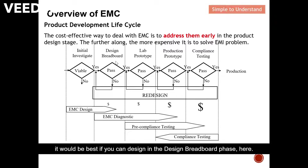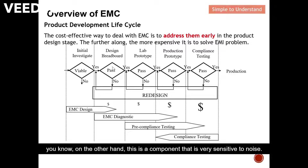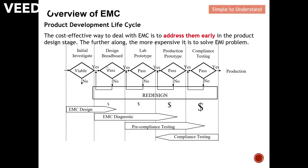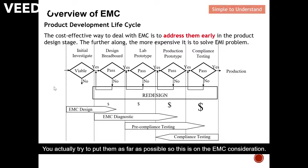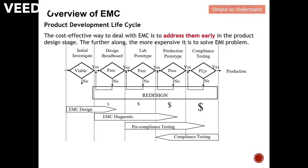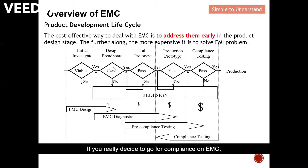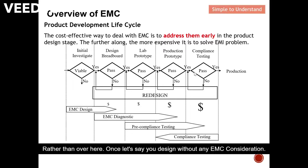The reason is, for example, you know that one component is very noisy and another component is very sensitive to noise. In the design breadboard phase, you do not want to put them close to each other — you try to place them as far apart as possible. This is an EMC consideration. If you decide to be compliant with EMC, you need to do all the design work in the early phase.